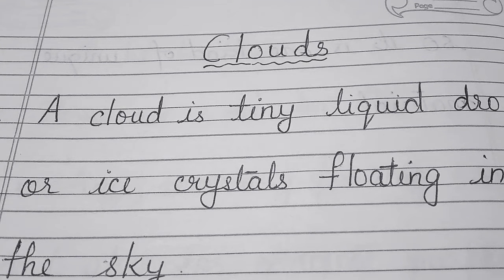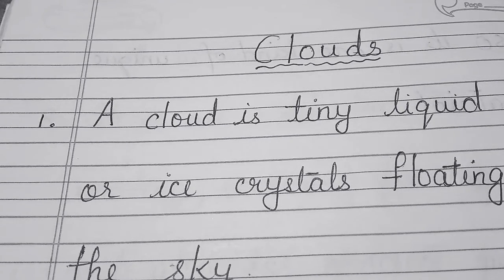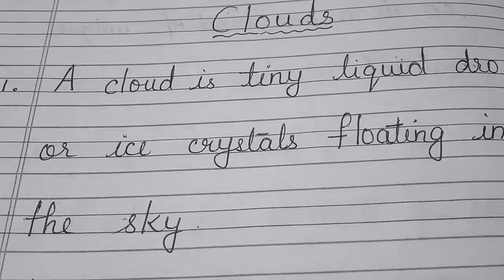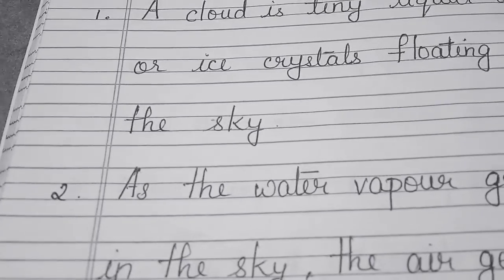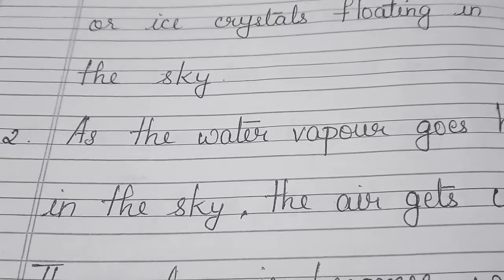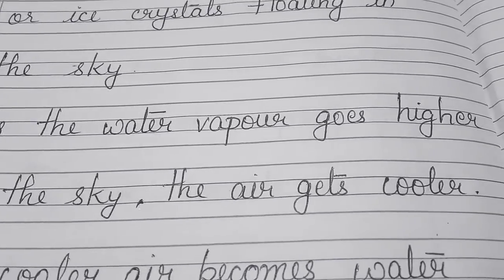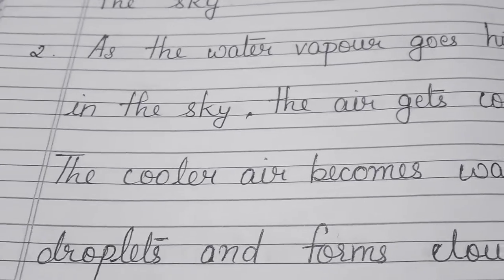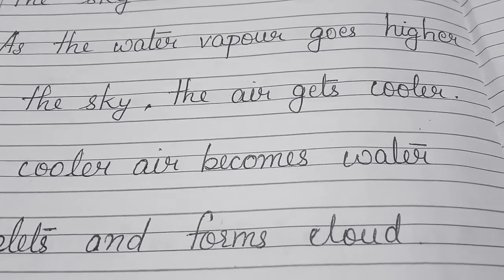Let's learn a few points on clouds and their types. A cloud is tiny liquid drops or ice crystals floating in the sky. As water vapor goes higher in the sky, the air gets cooler. The cooler air becomes water droplets and forms clouds.